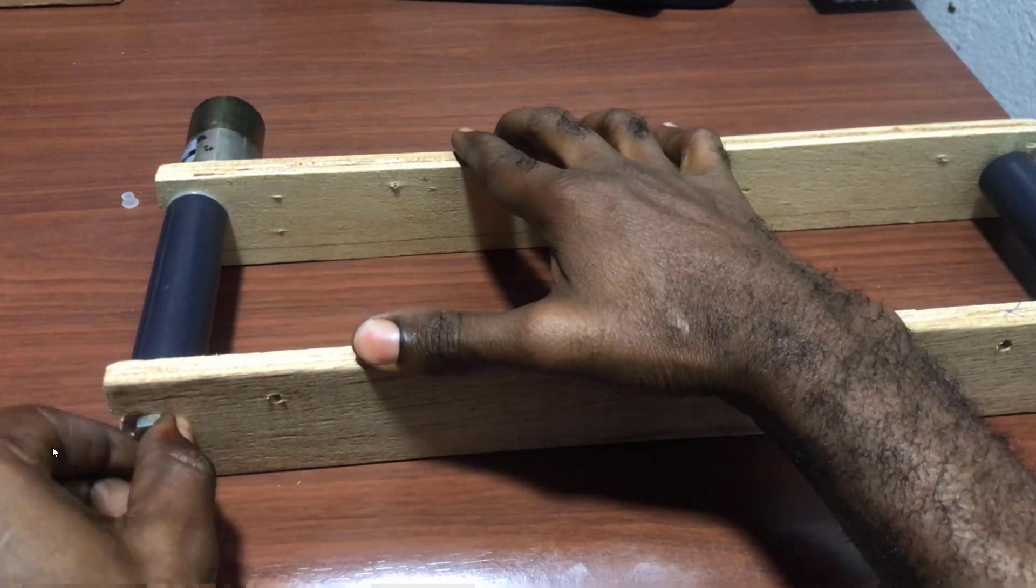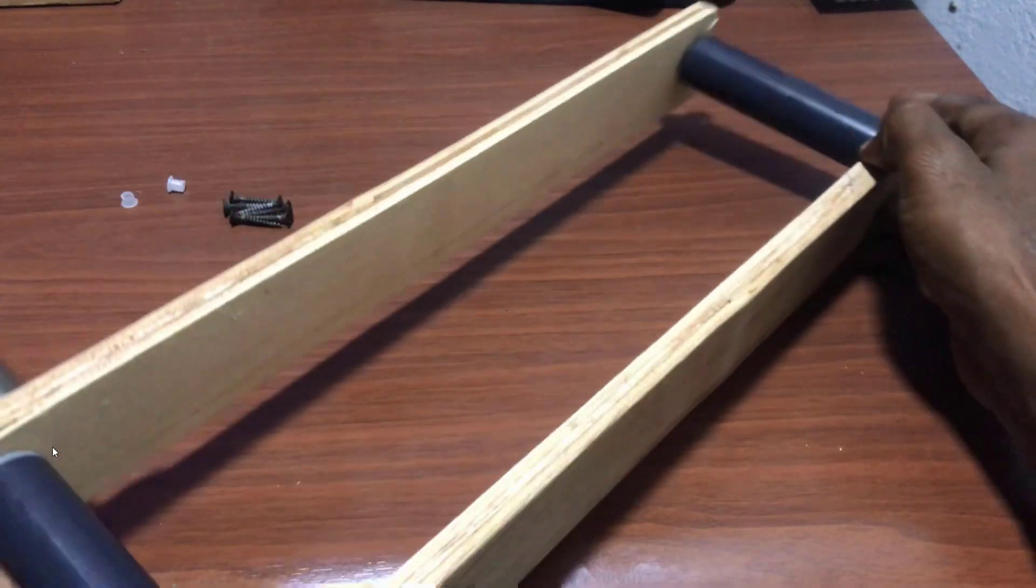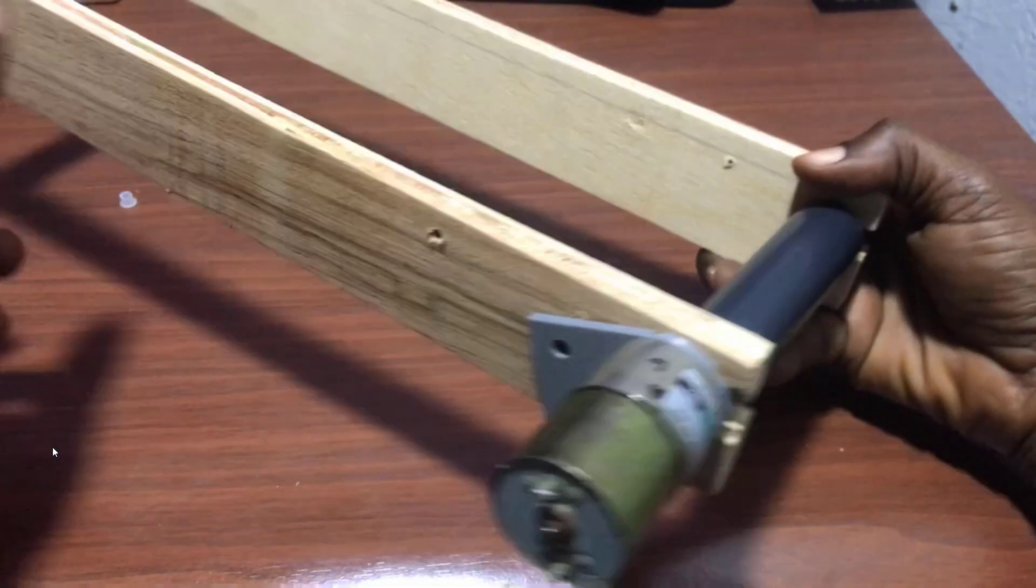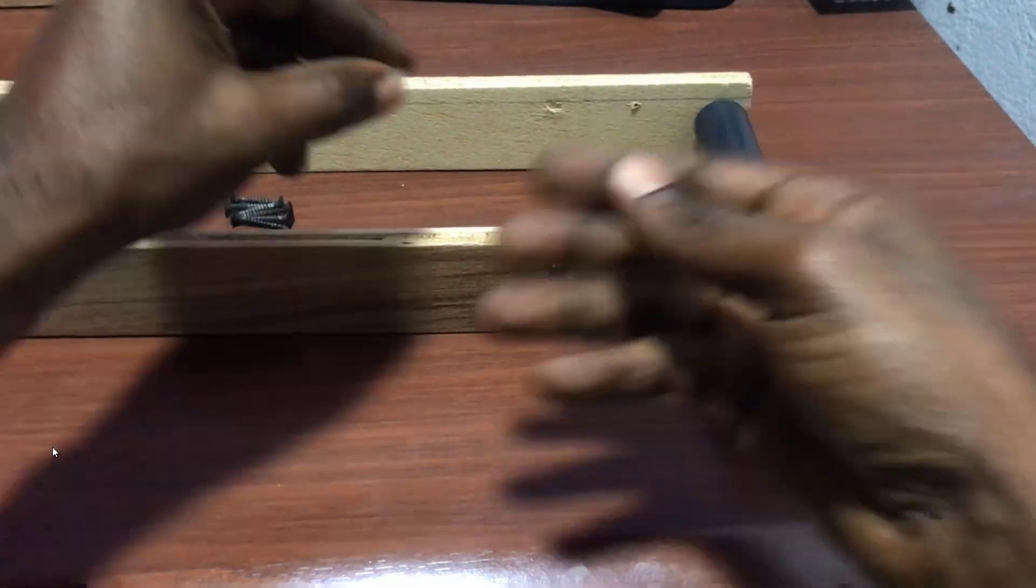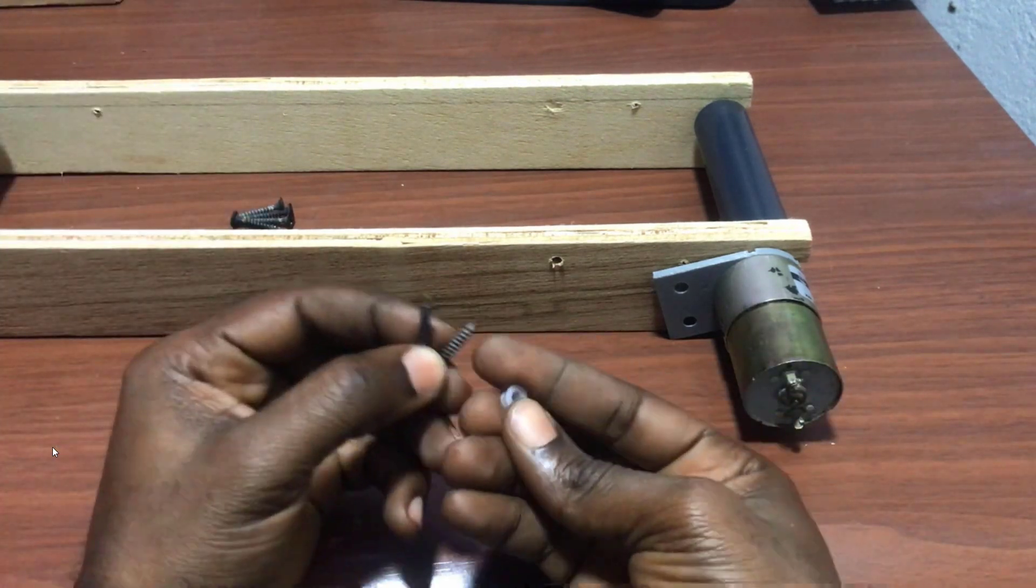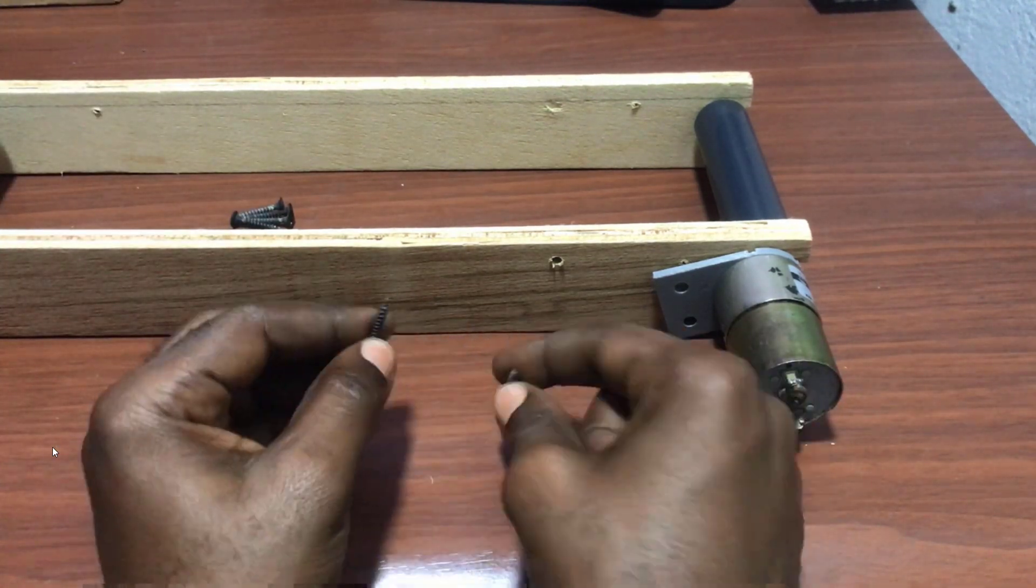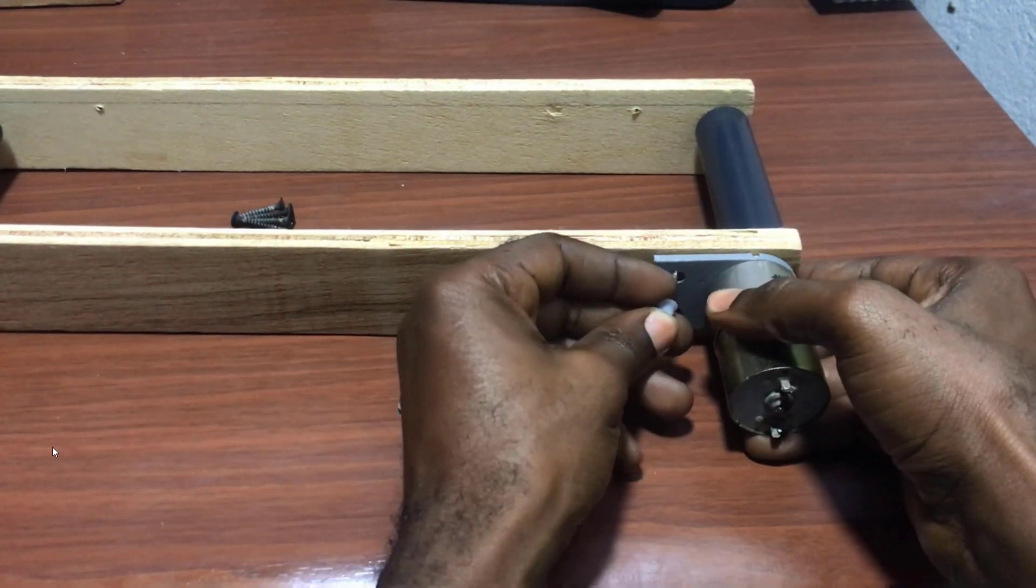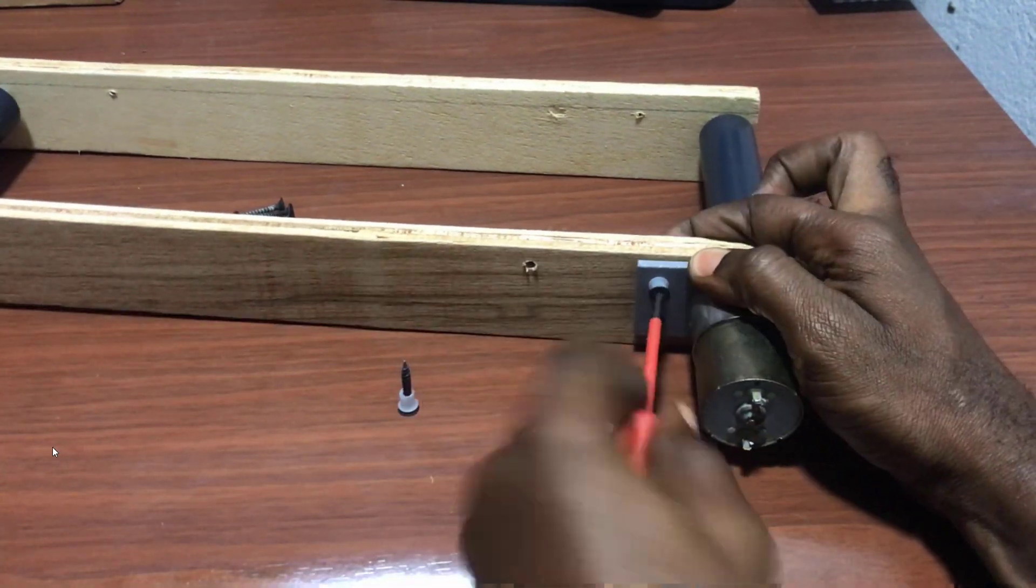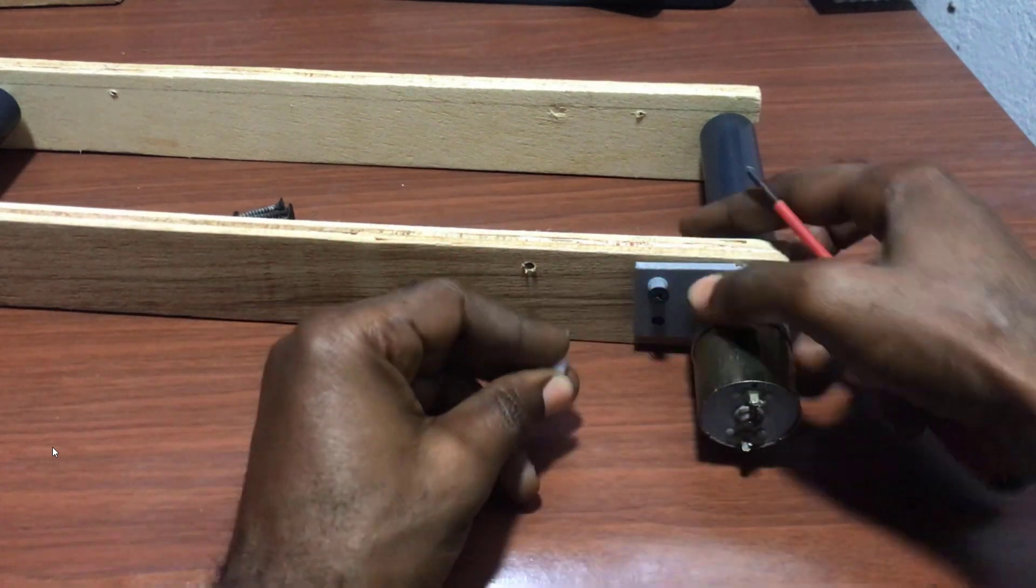It's advisable to use washers. For now, I don't have any washers lying around, but in the future I will apply washers too. We put the spacer to the screw. We position the first screw and then screw it into position.